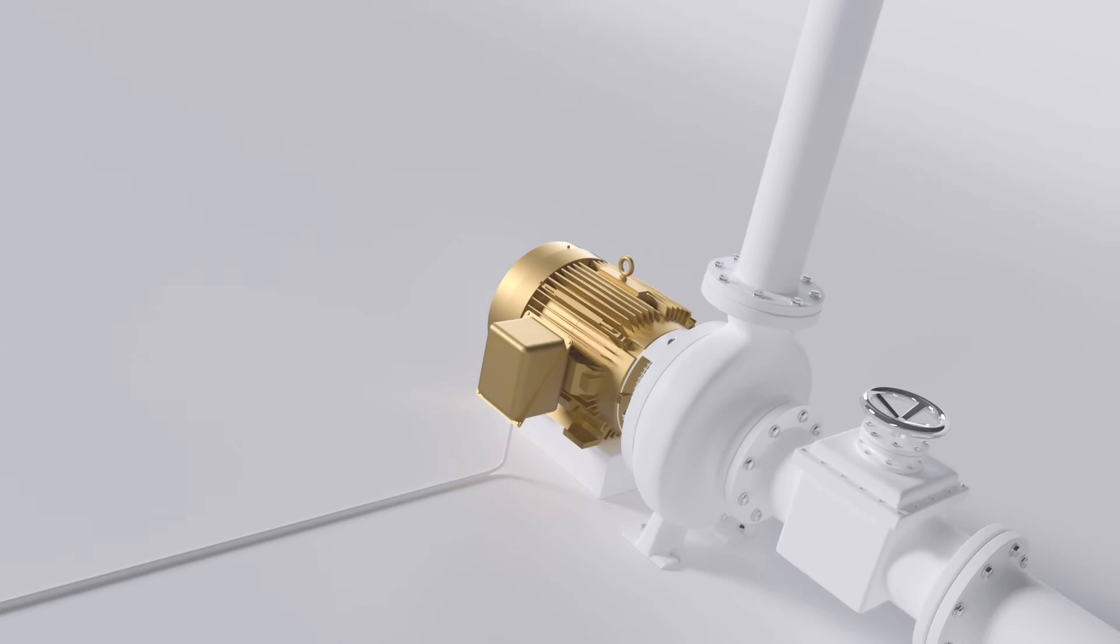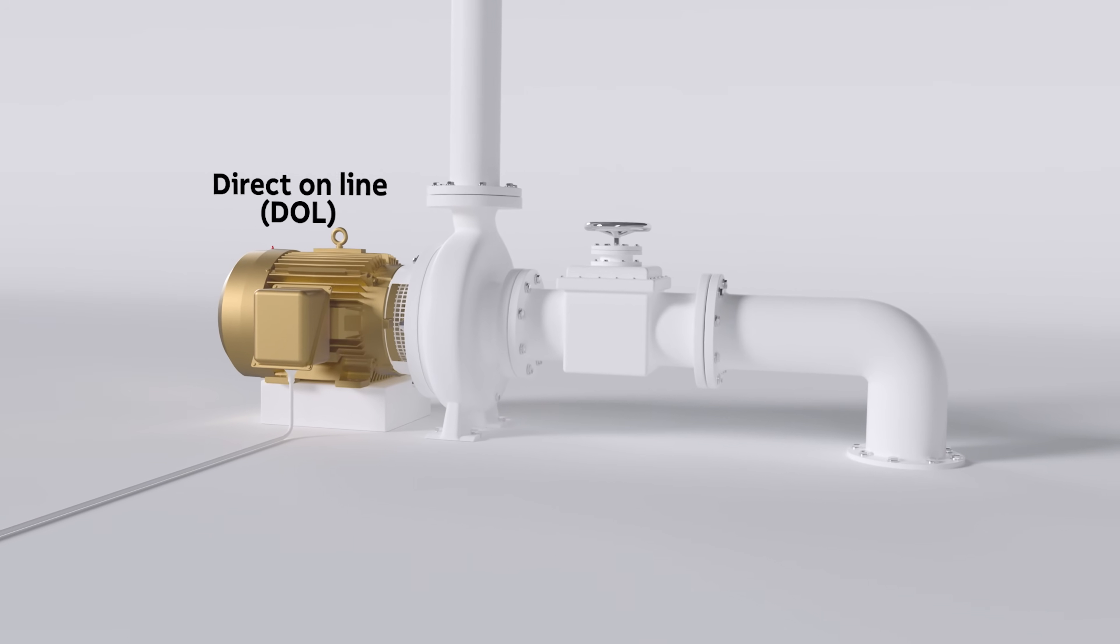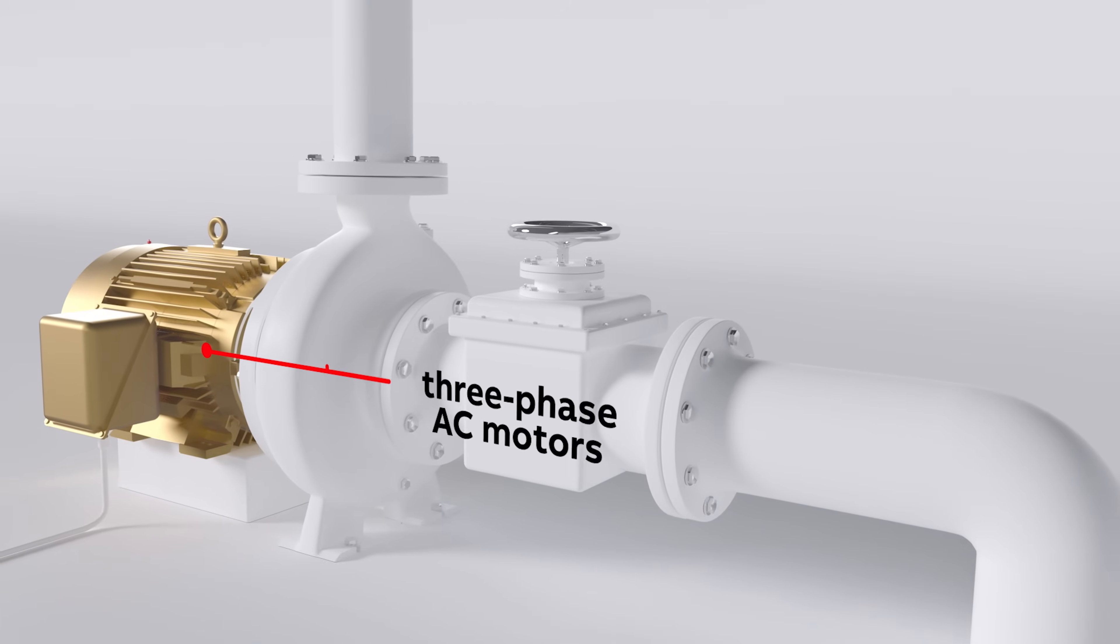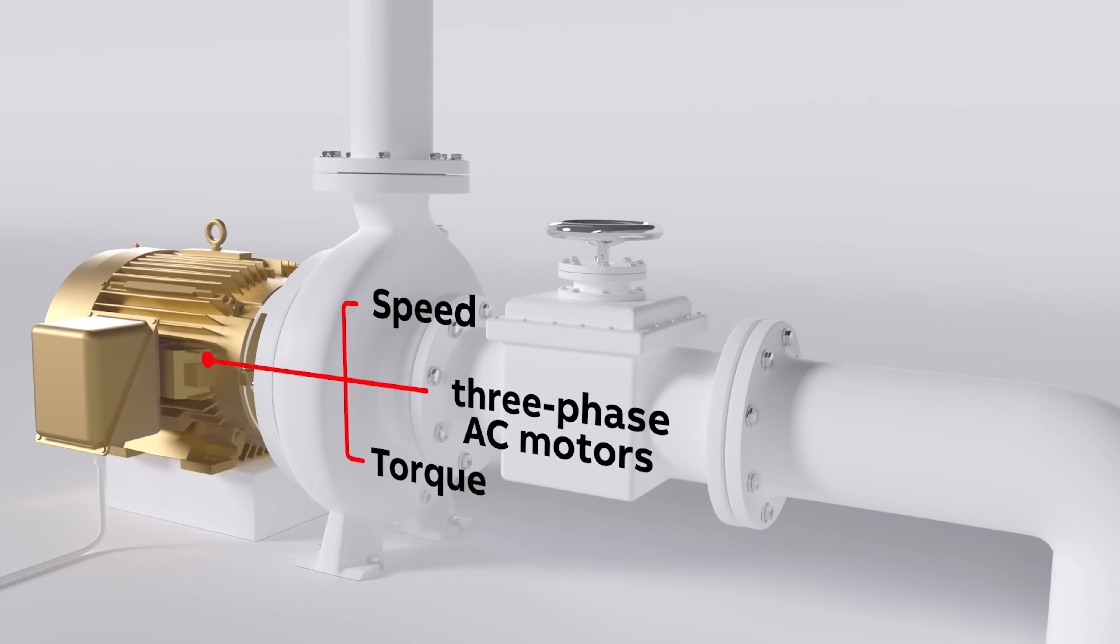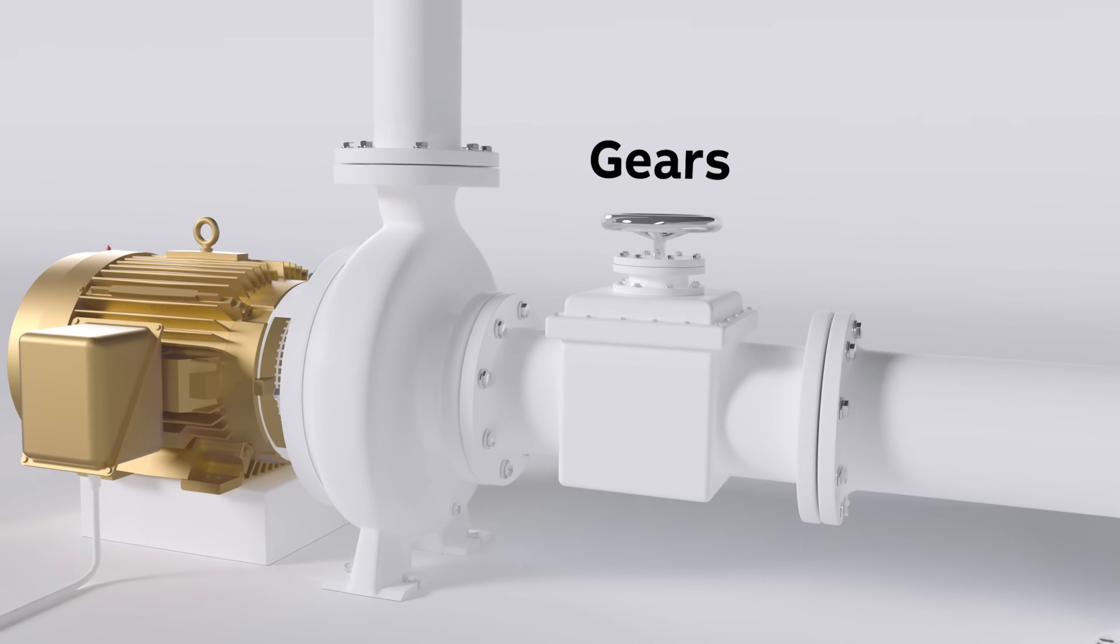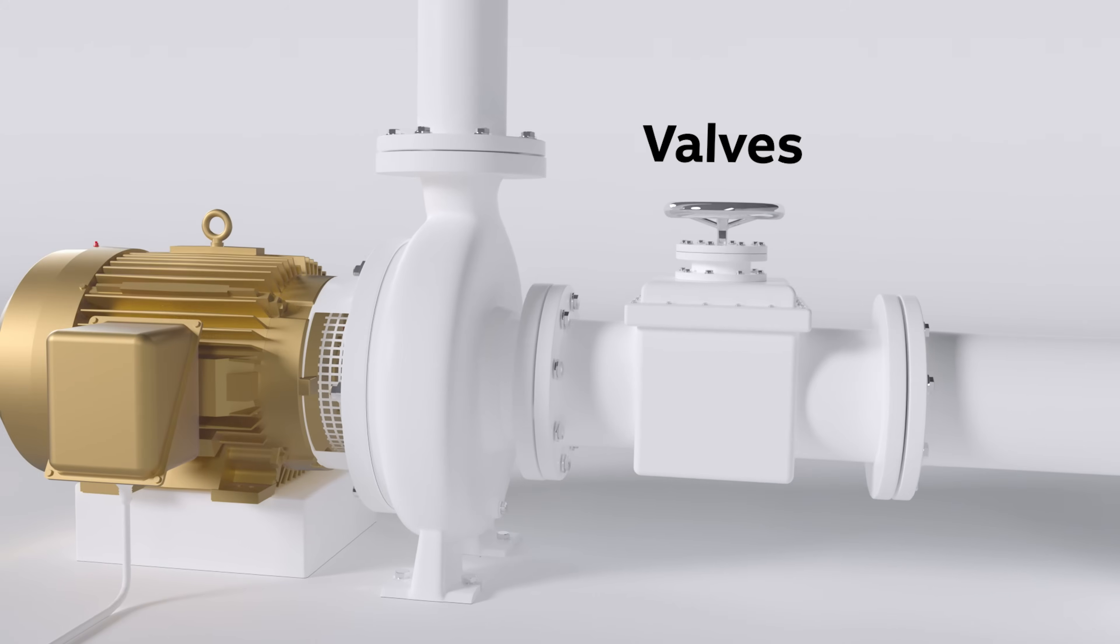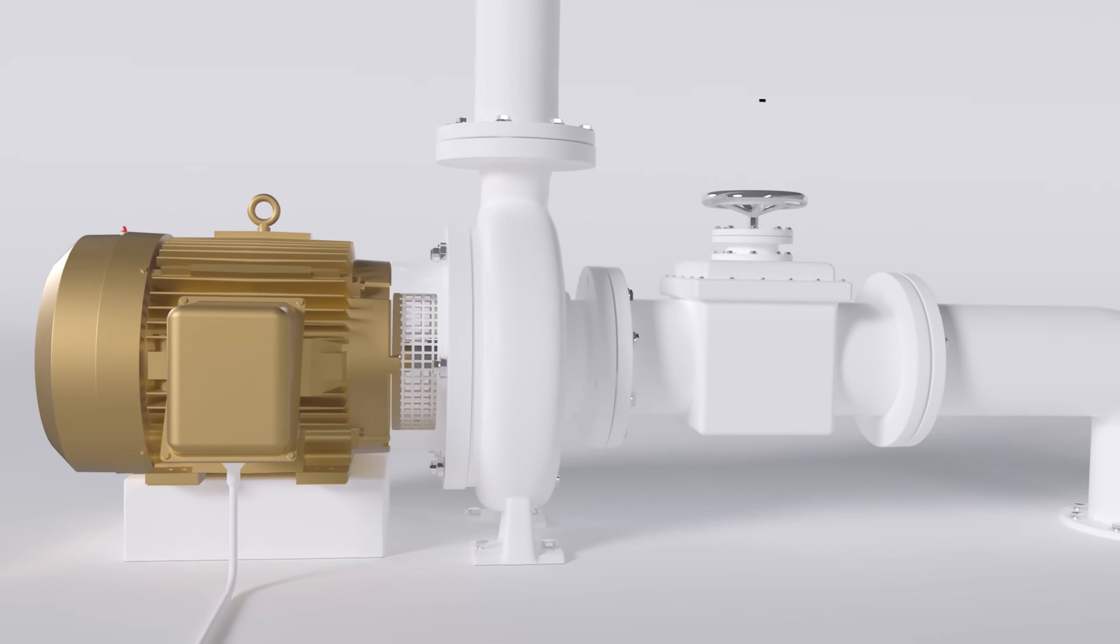Most older motors operate direct online, or DOL. These three-phase AC motors control speed and torque through mechanical means such as gears and brakes, and control flow and pressure with valves, dampers, and throttles.